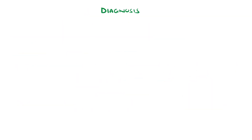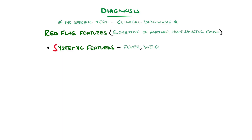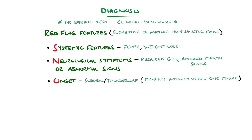There is no specific test for migraine, and the diagnosis primarily focuses on ruling out dangerous underlying causes for headache as well as correlating the history with suggestive features. SNOOP4 is a mnemonic that helps remember the features suggesting a potentially more dangerous problem. S stands for systemic features such as fever or weight loss. N for neurological symptoms or abnormal signs such as reduced conscious level or altered mental status. The first O is for onset with sudden or thunderclap, meaning reaching maximum intensity very rapidly within a minute, or headaches that progressively worsen over weeks. The second O is older age, with episodic headaches beginning after the age of 50 raising a red flag.